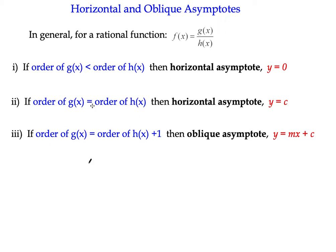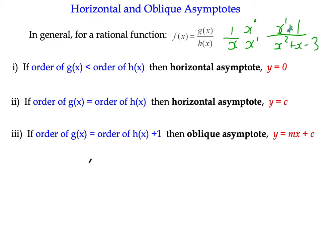Condition one: if the order of g of x is less than the order of h of x - for instance, 1 over x, which is effectively an x to the power of 0 polynomial over an x to the power of 1 polynomial. The order of the numerator is less than the order of the denominator. It could also be a function like x plus 1 over x squared plus x minus 3 - order 1 over order 2. Then we can expect a horizontal asymptote where that asymptote is the equation y equals 0, which is on the x-axis.